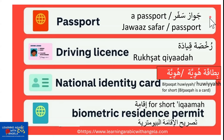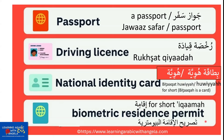So one more time: jawaz safar; rukhsat qiyada; huwiyya for short, or bitaqatu huwiyya; iqama for short, or the long phrase tasrih al-iqama til biometriya — biometric residence permit.